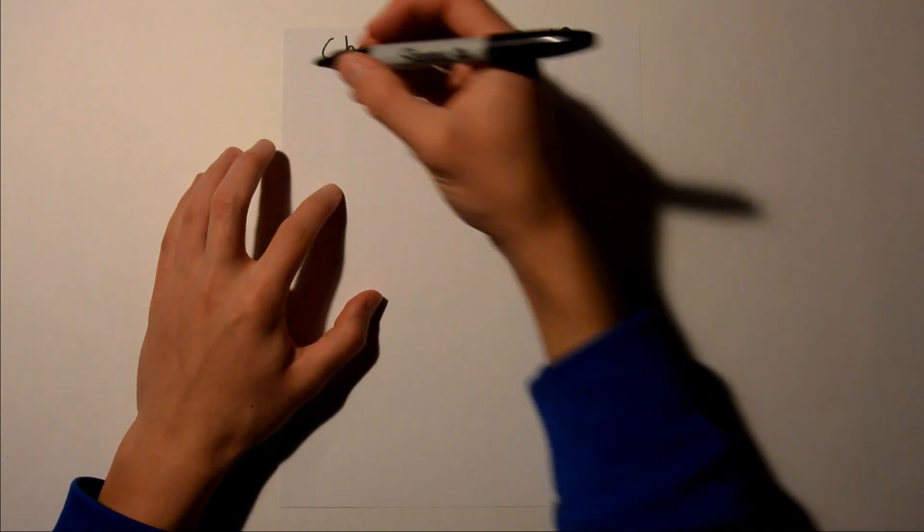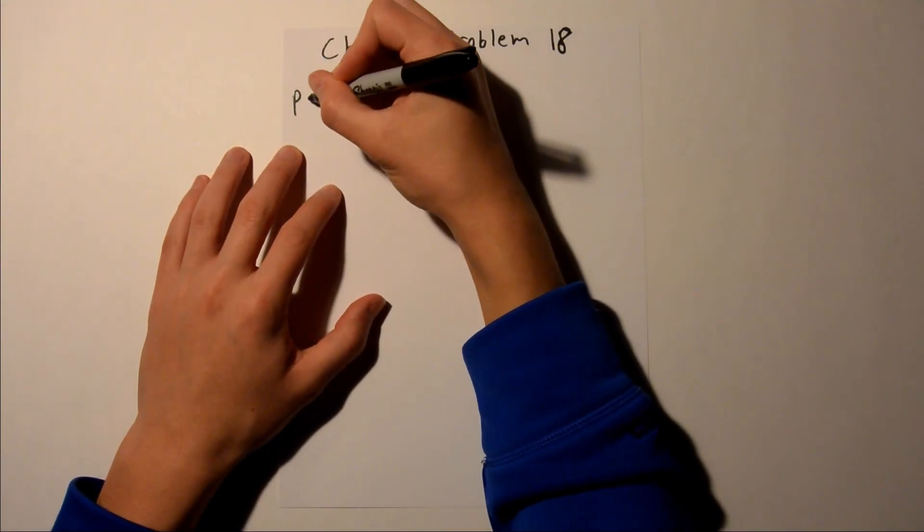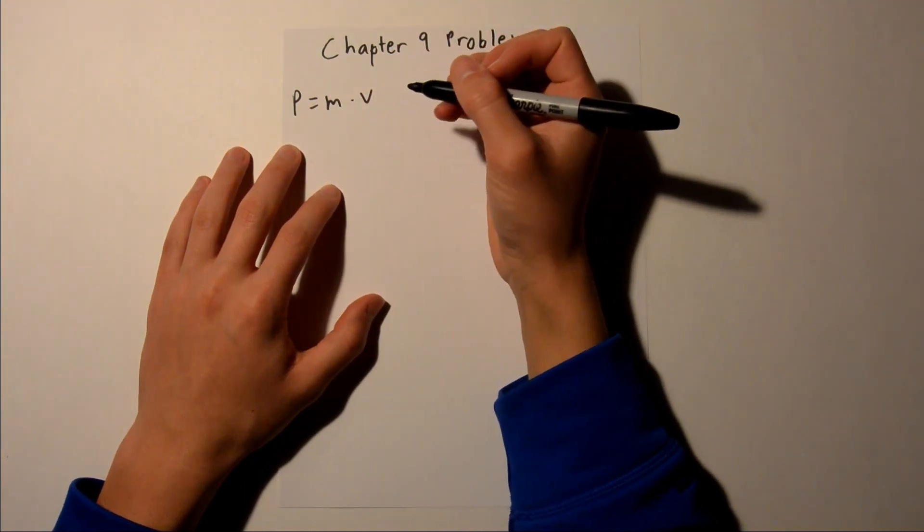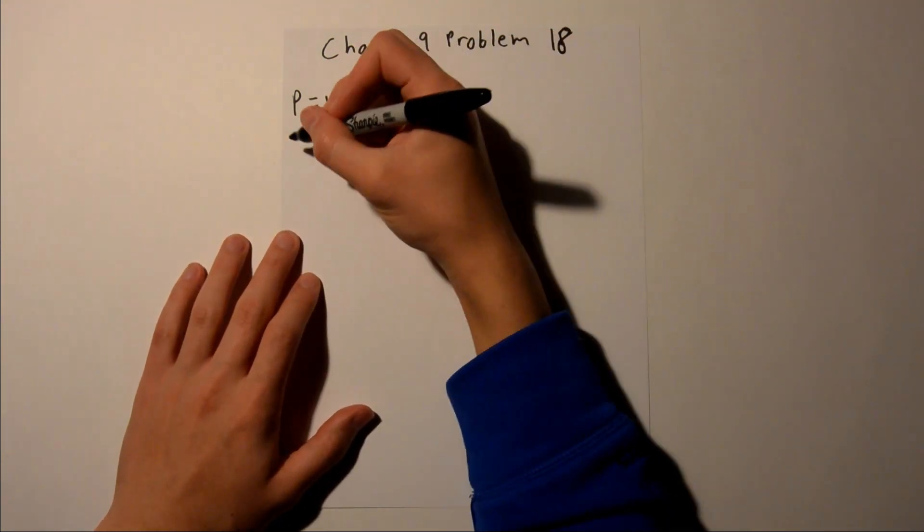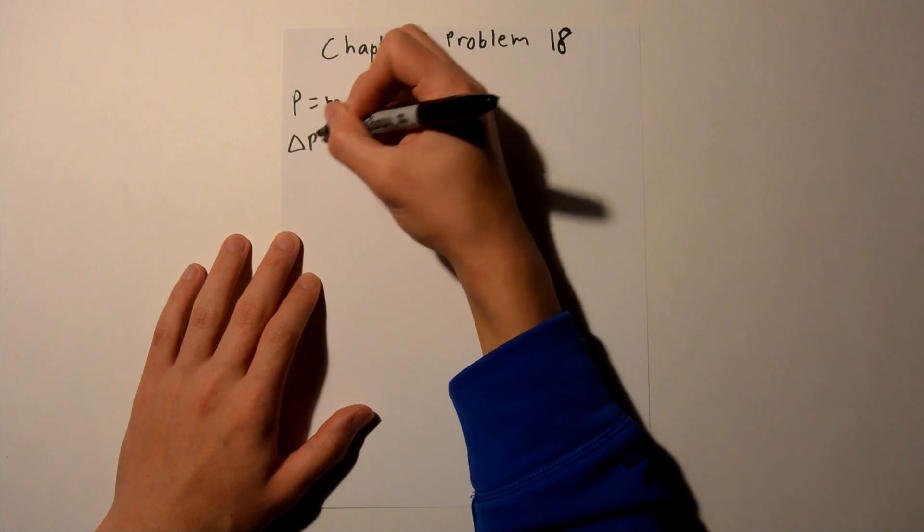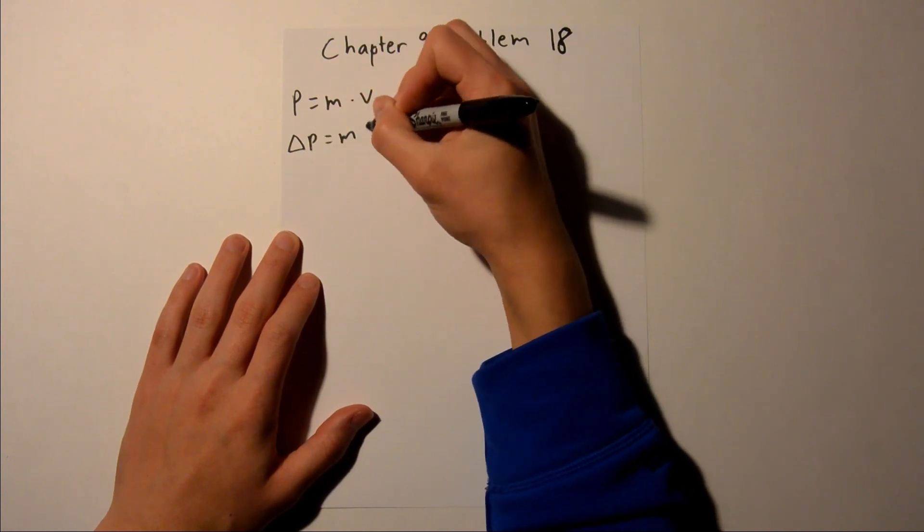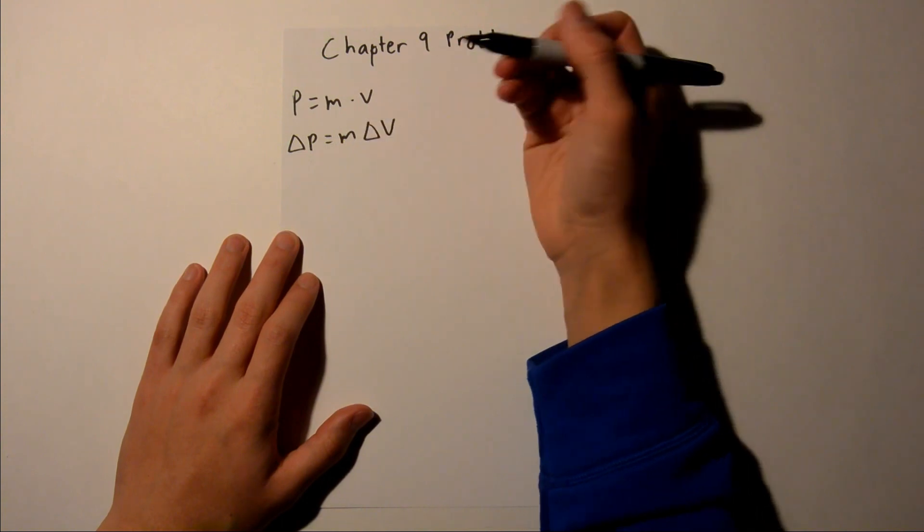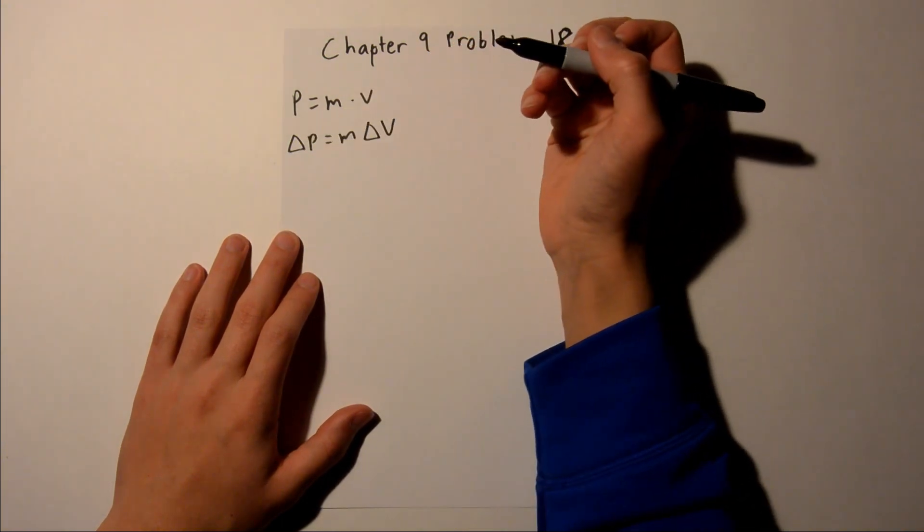So we know that momentum is equal to mass times velocity. But since we're looking for the change in momentum, the change in momentum is going to be equal to m delta v. We know this because the velocity is changing and the mass stays the same, so this expression is valid.